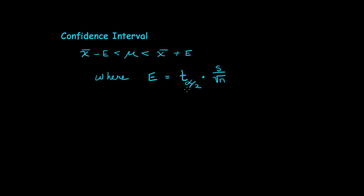Well, there's that critical value, t alpha over 2, and we'll discuss that in a minute. And here is our sample standard deviation divided by the square root of n. So it's the product of these two things. The critical value times the sample standard deviation divided by the square root of n.